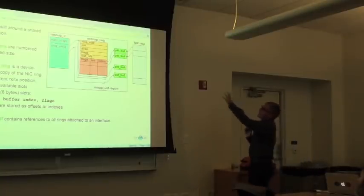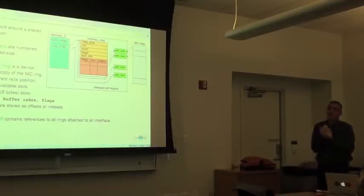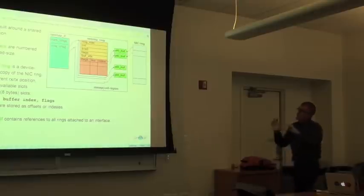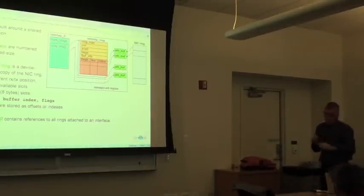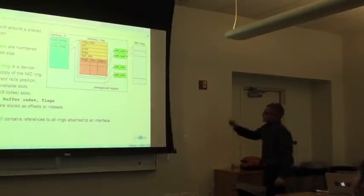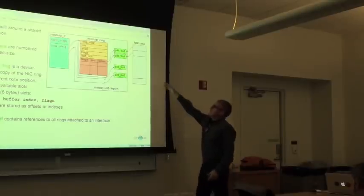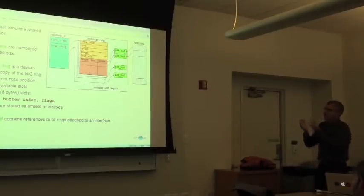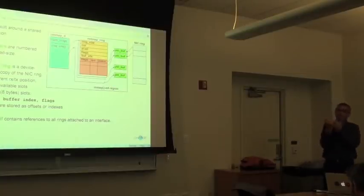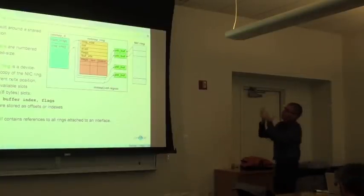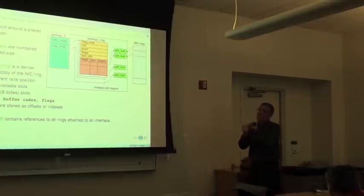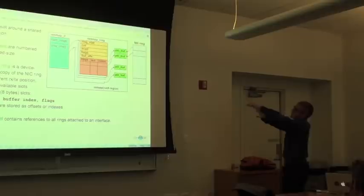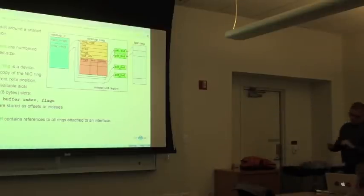Whenever you have an interface and want to control it using NetMap, there is this data structure to manage it. The NIC ring is also in main memory but is not accessible from user space — it's managed by the NIC and the device driver. It points to the same buffers. We'll see how the netmap ring and the NIC ring share information.